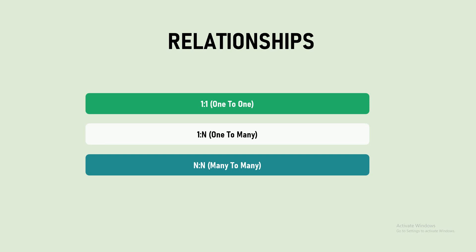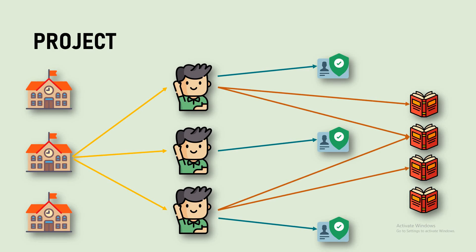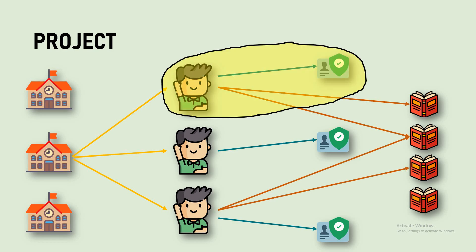There are three types of relationships in a database: one-to-one, one-to-many, and many-to-many. One-to-one means one entity is directly related to one other entity. One-to-many means one entity is related to n number of entities, and many-to-one is the reverse. Many-to-many means many entities are related to many entities. In our project, students and ID cards have a one-to-one relationship — one student can only have one ID card, and one ID card can only belong to one student.